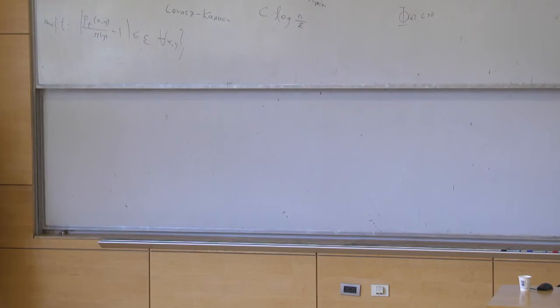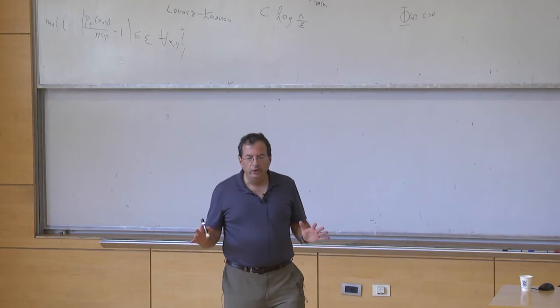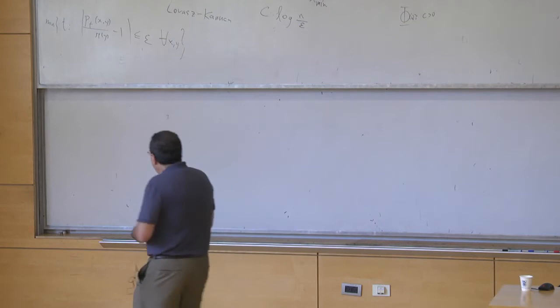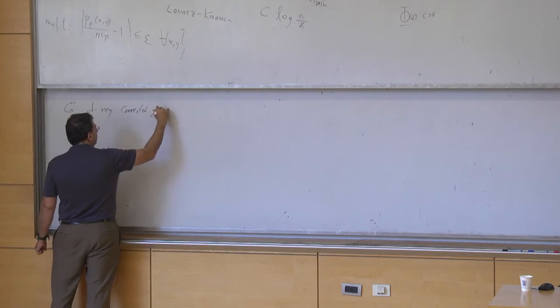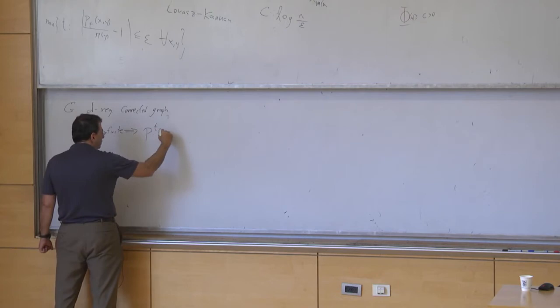There are two simple extreme cases. One is when you have an expander, so phi(u) is a constant. Another is when you have a regular graph with no further assumptions — a regular connected graph. For G infinite, you want to show that transition probabilities are always bounded by some constant times degree^{-1} times t^{-1/2}, i.e., constant over root t, for all t, x, and y.